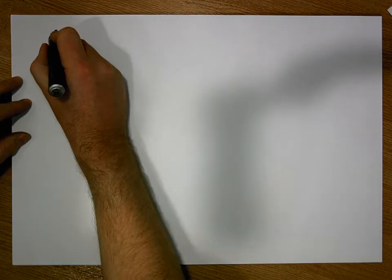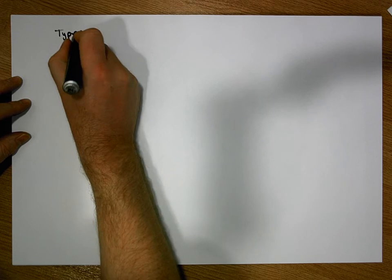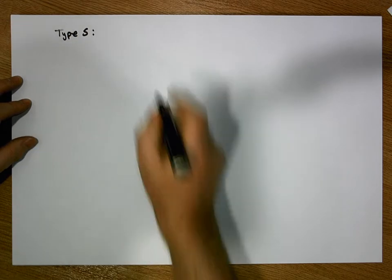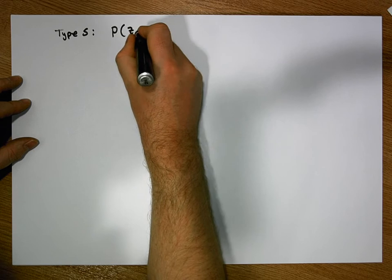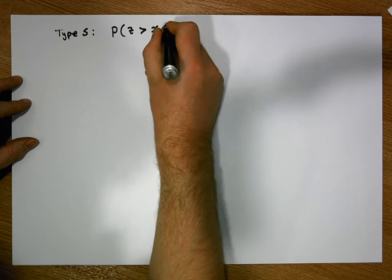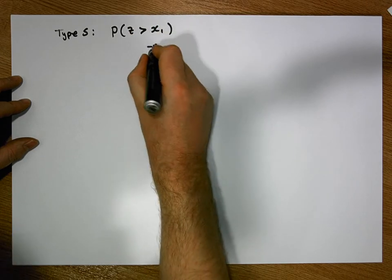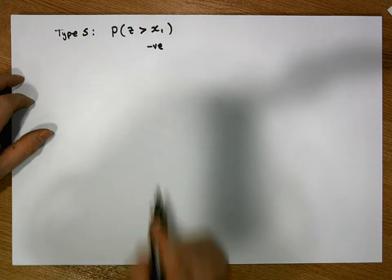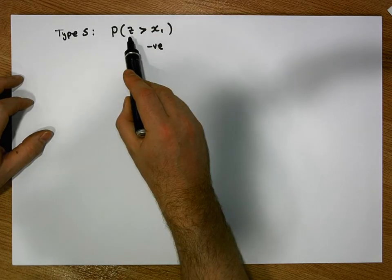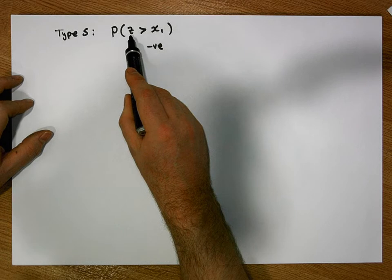Hi guys, this is Jonathan Lambert with the Mathematics Development and Support Service at the National College of Ireland. In this short video we're going to deal with what we have called type 5 probabilities — probabilities where we want to calculate the probability of a z-score being greater than a particular value, where this value is a negative value. Let's draw the standard normal curve for the standard normal variable z.